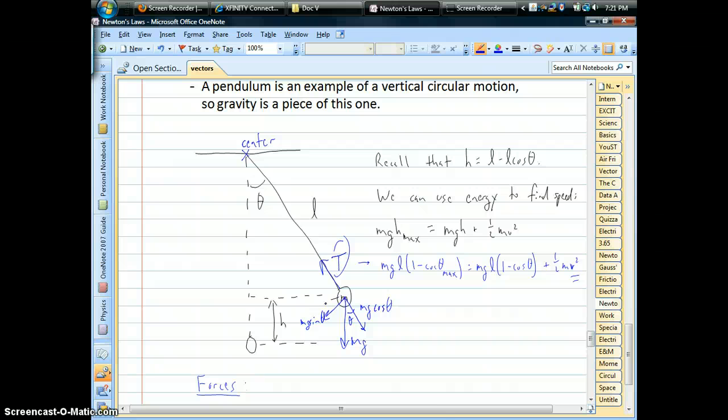Now, because everything changes with angle, as we can see with our gravity components, that means if we want to do centripetal force, mv squared over r, we have to figure out what the v squared is, what the speed is. And energy is definitely the way to go. Non-constant forces and Newton's laws would be a calculus problem, so if you can avoid that, go for it.